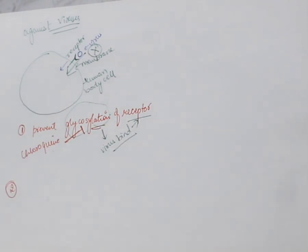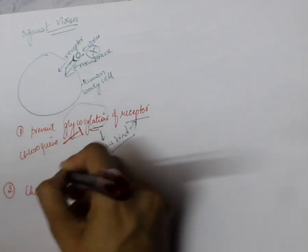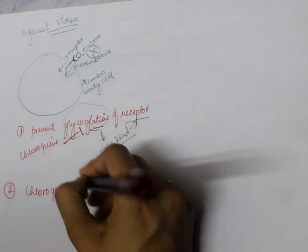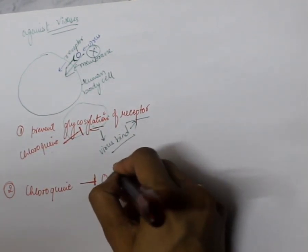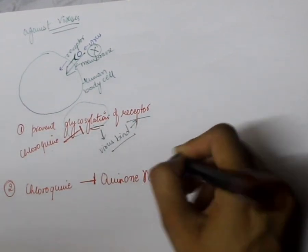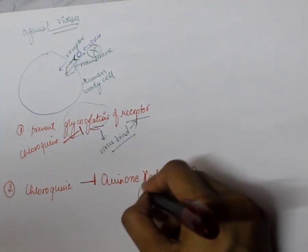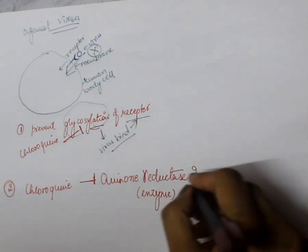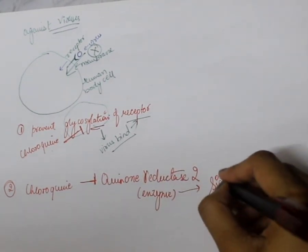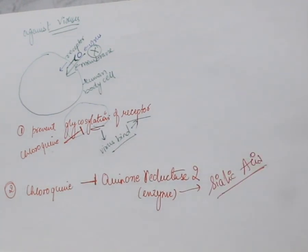The second mode of action: chloroquine is believed to block the formation of quinone reductase-2. Quinone reductase-2 is an enzyme responsible for the formation of sialic acid.